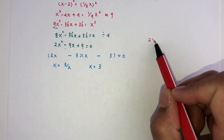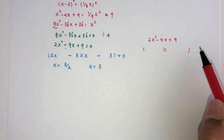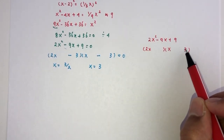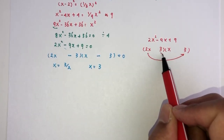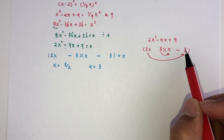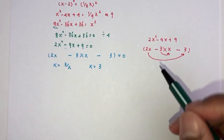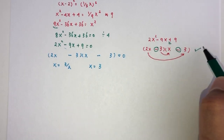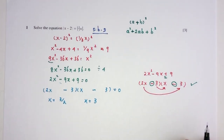To check the factorization of 2x squared minus 9x plus 9: 2x squared comes from 2x times x, and 9 is 3 times 3. For the middle term to give minus 9x, we need 2x times minus 3 which is minus 6x, plus x times minus 3 which is minus 3x, giving minus 9x. Then minus times minus becomes plus, confirming the constant term is plus 9. So this is the right factorization. That is your question number 1.